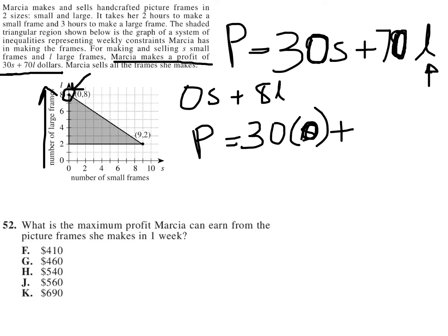But she is making 8 large frames, so that's 70 times 8. Now, what I get from that is 0 plus 560, and I get a profit of $560.